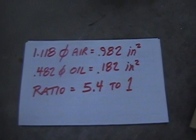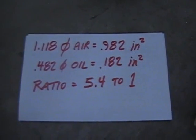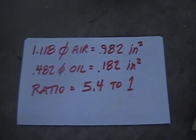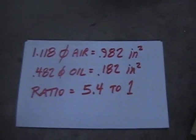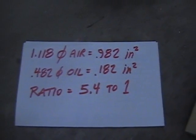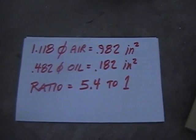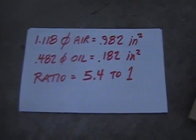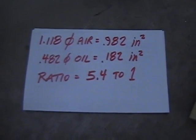And if we take a look at the math on this, the air cylinder at the top, 1.18 diameter. And the rod that pushes on the oil, 0.482. And the ratio of the areas is 5.4 to 1. So that means we're going to get about a 5.4 to 1 multiplication on the pressure.